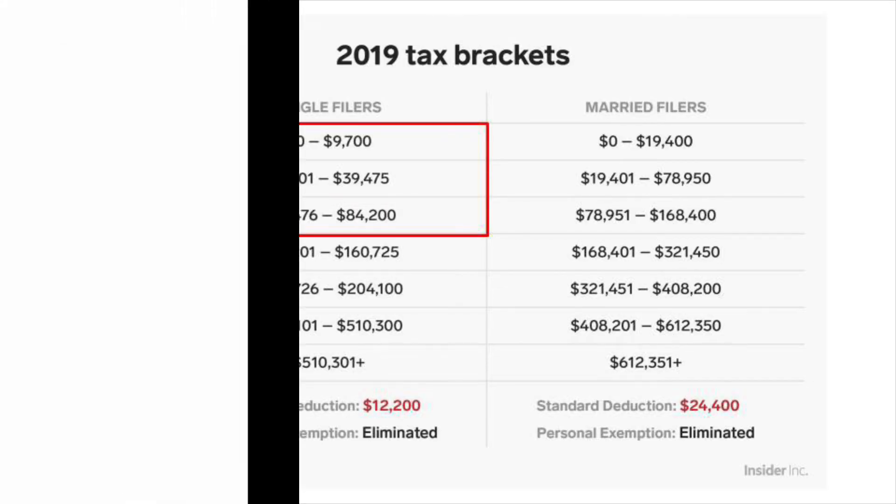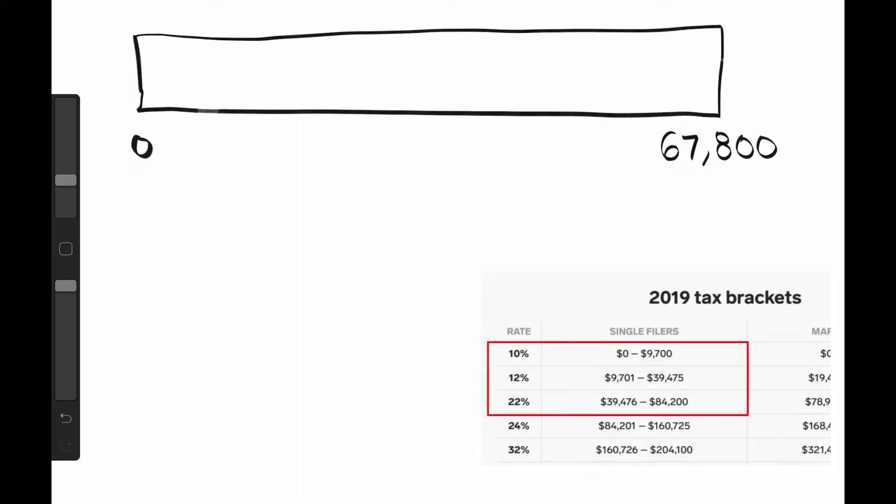Now we can go to the drawing board and calculate the tax for each bracket. We can draw a box to represent Mario's taxable income starting at zero and going up to $67,800. Using the tax bracket table, we know that the first bracket, zero to $9,700, is taxed at 10%.